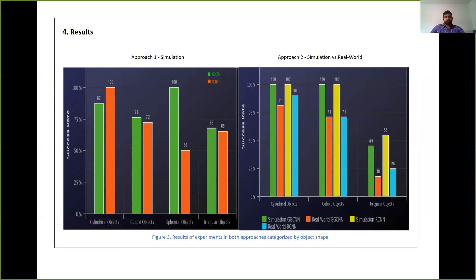And first we have the first approach, which we only tested in simulation. And in this approach, we have better results for the generative grasping CNN than the RCNN multi-grasp network.